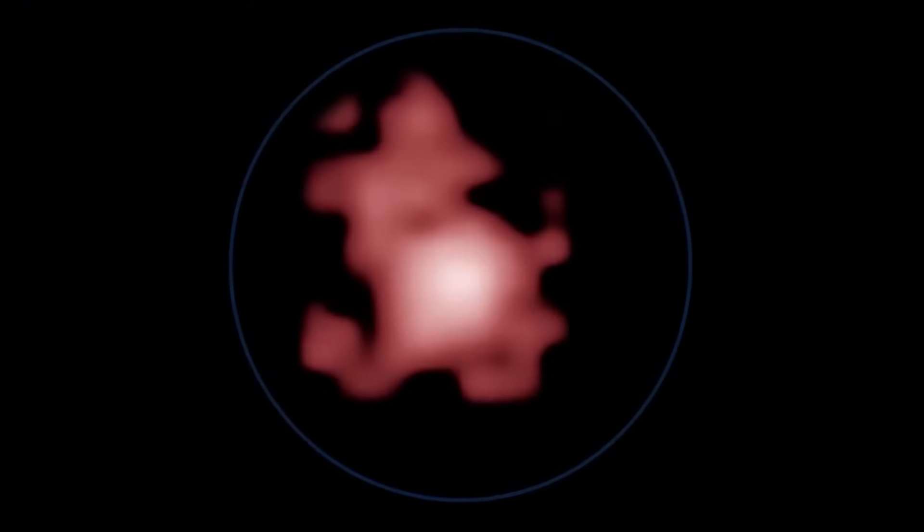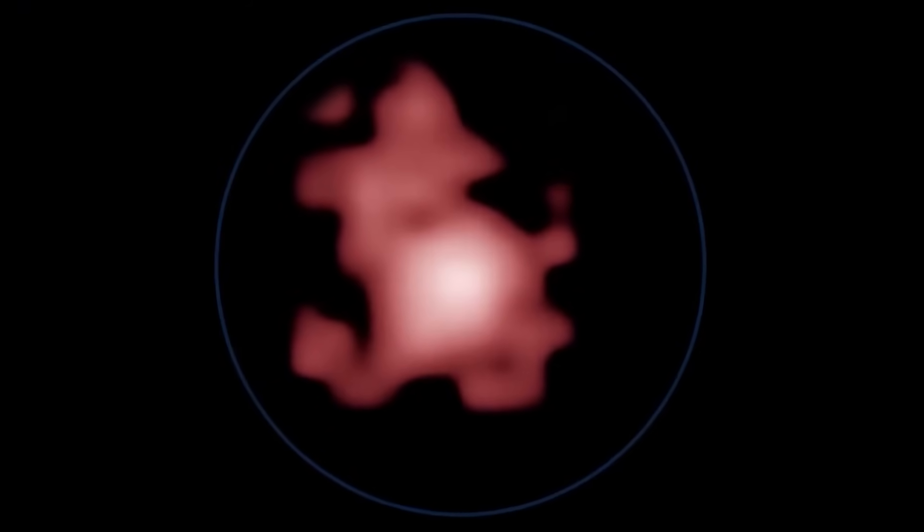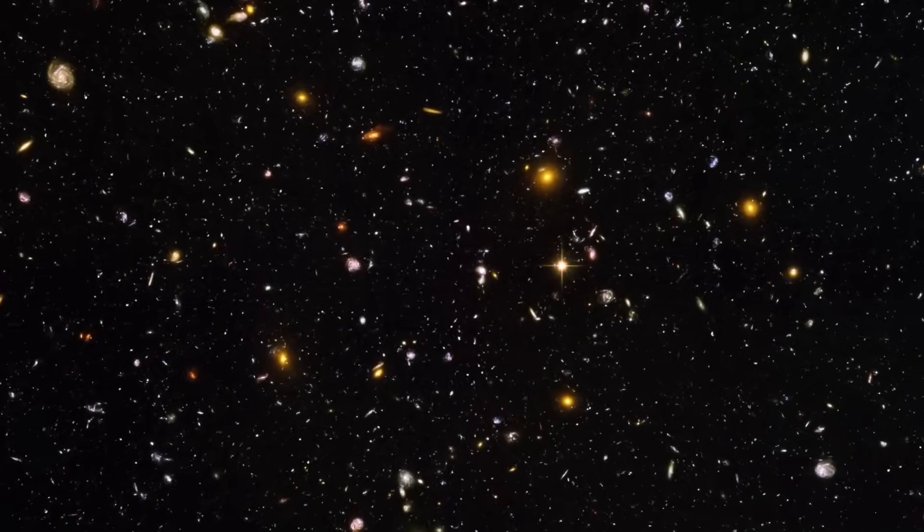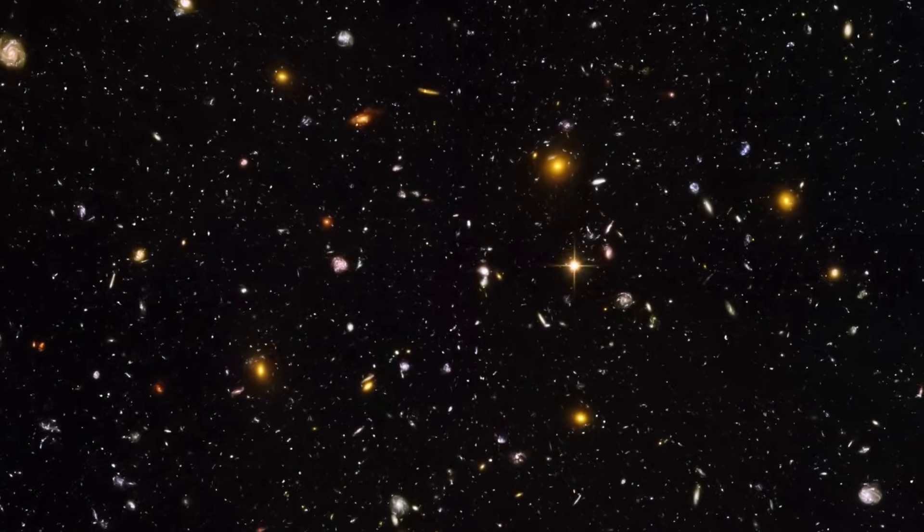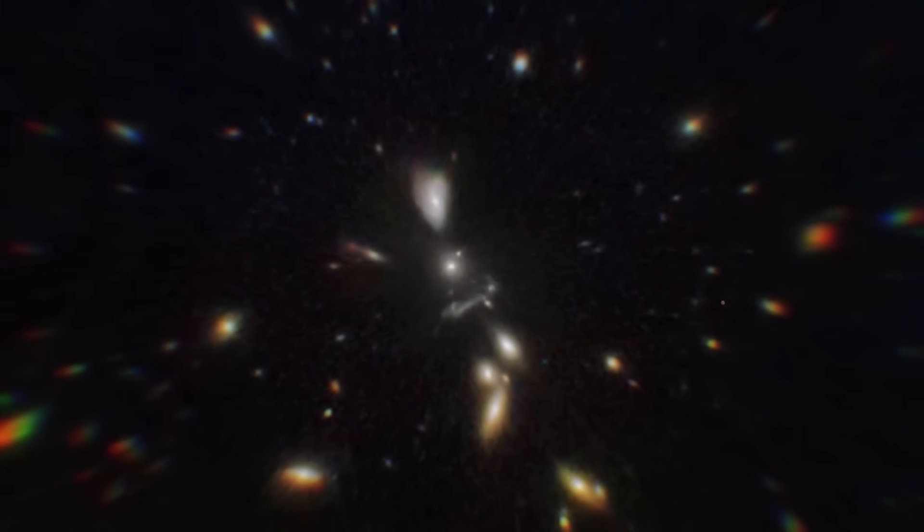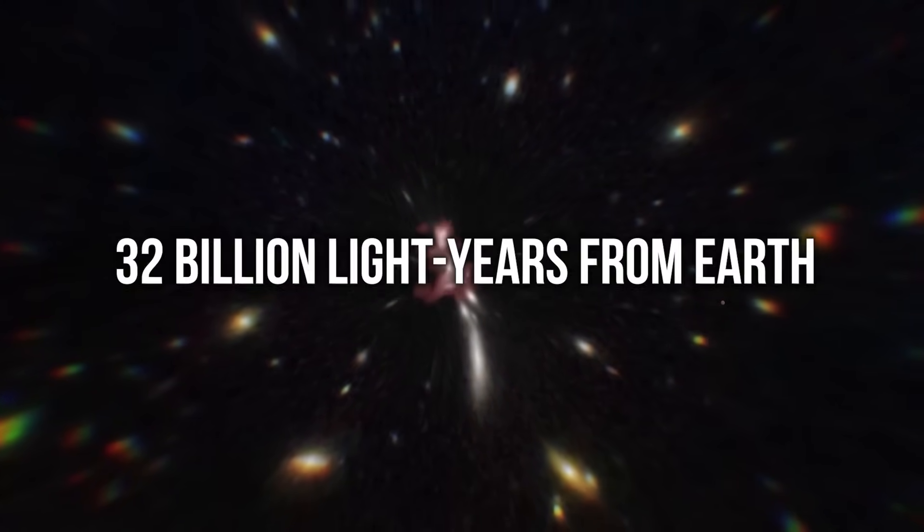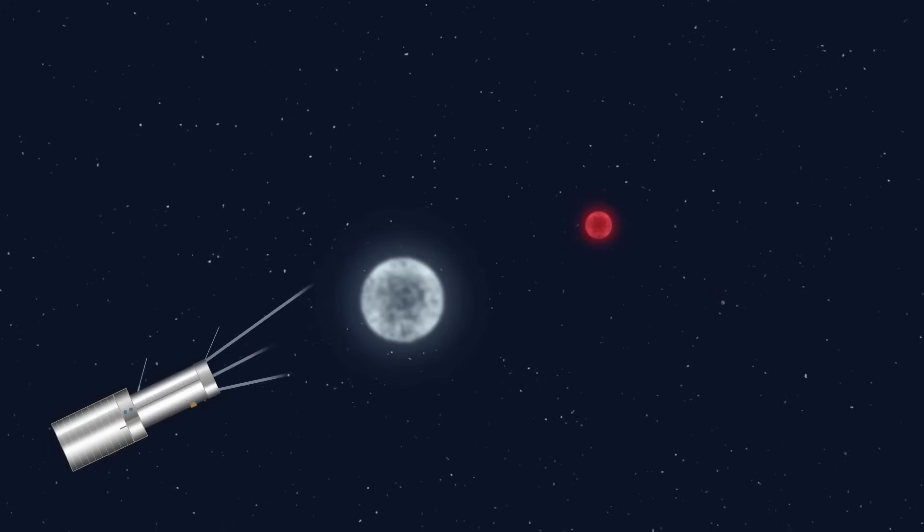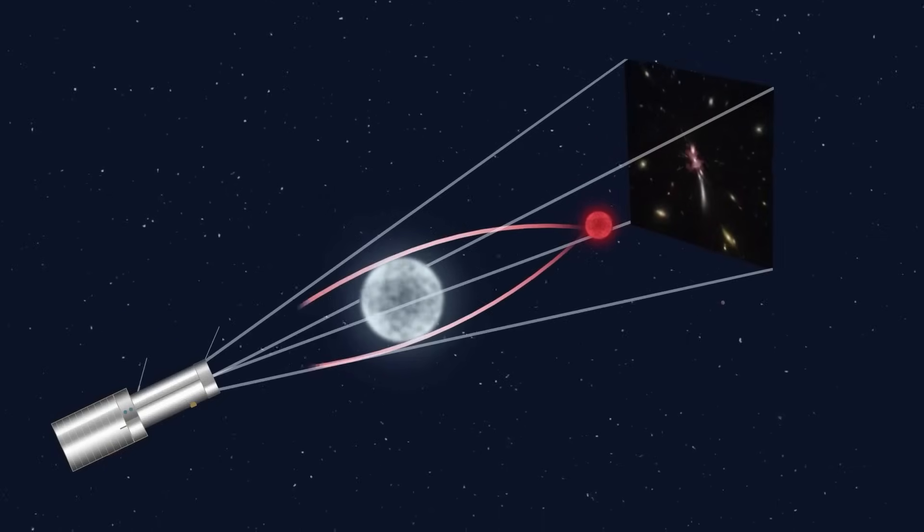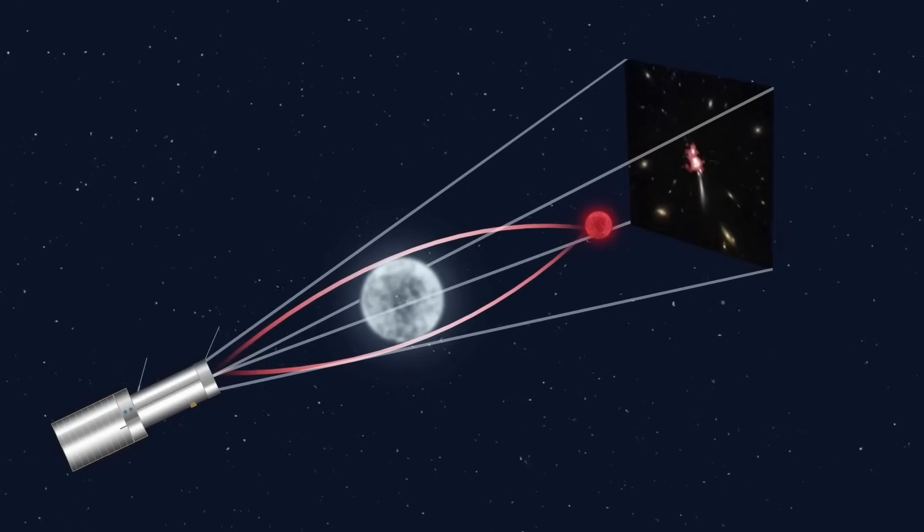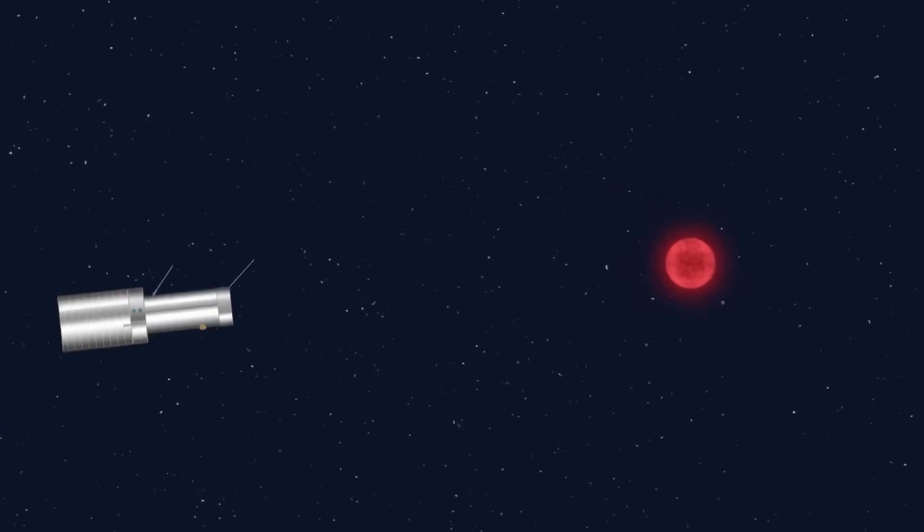However, despite the light from this galaxy reaching us from 13.4 billion years ago, it now lies much farther away than 13.4 billion light years. In fact, astronomers believe it's a staggering 32 billion light years from Earth. So it's essential to recognize that the universe's age in years doesn't directly correspond to its size in light years.